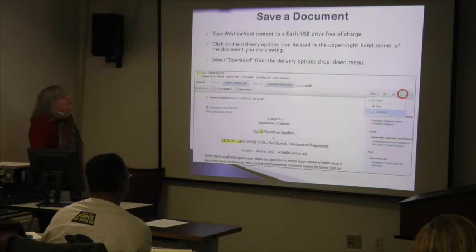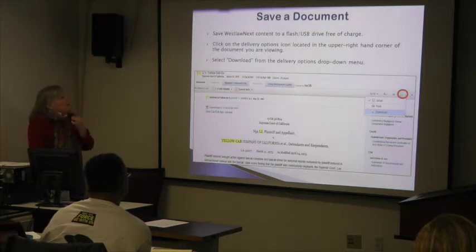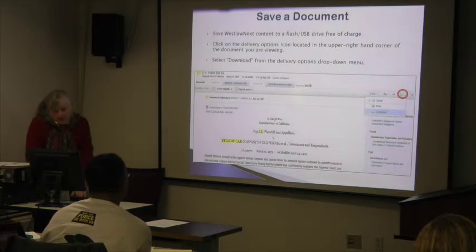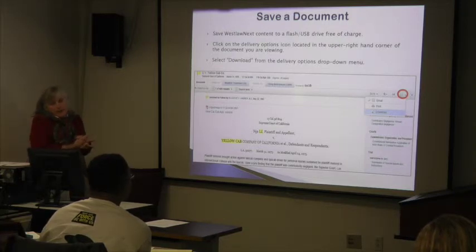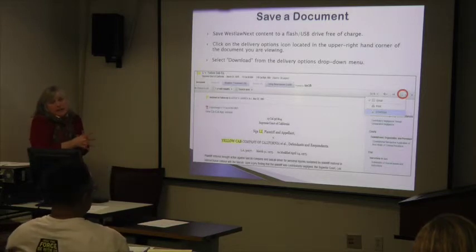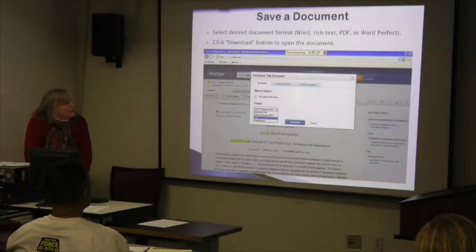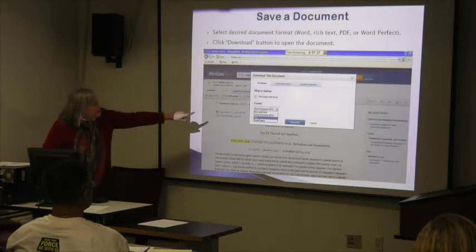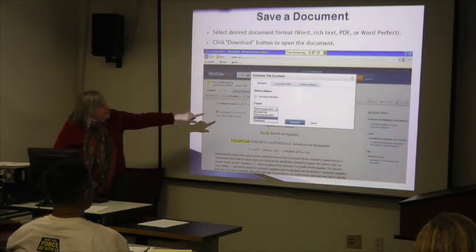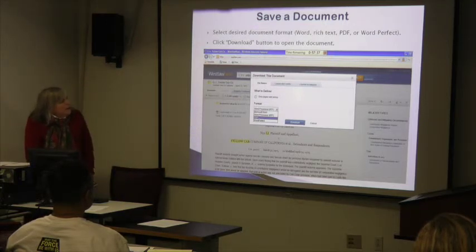To save a document, another delivery option is free of charge — you can save it to a flash drive. Flash drives can be purchased at the library for ten dollars if you don't bring your own. Use the delivery option icon in the upper right-hand corner and select the download arrow. A download box appears, and you can download in various formats such as PDF or Word. Select your format and click 'Download.'